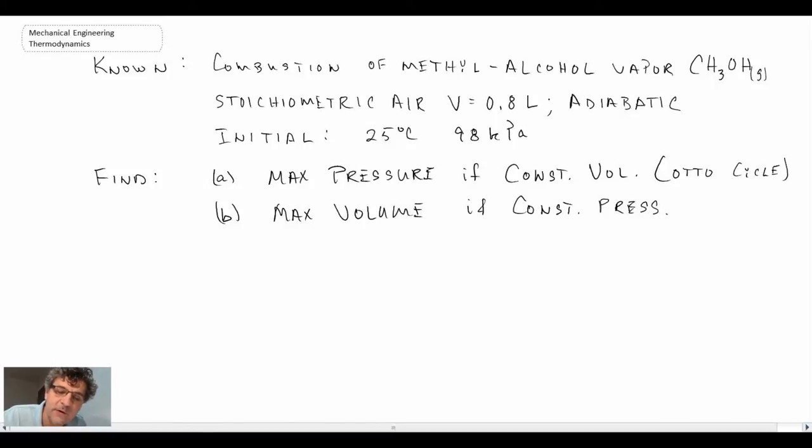We want to find max pressure if it is a constant volume combustion process, which would replicate what happens in the Otto cycle. And we also want to find max volume if it was constant pressure combustion. So the first place to start with solving this problem is to do the stoichiometric balance. We don't have excess air. We have the stoichiometric amount of theoretical air. So that will simplify things a little bit. But let's begin by doing stoichiometry.